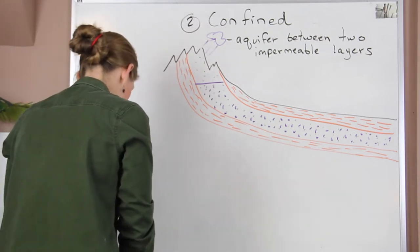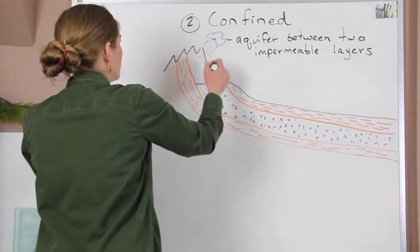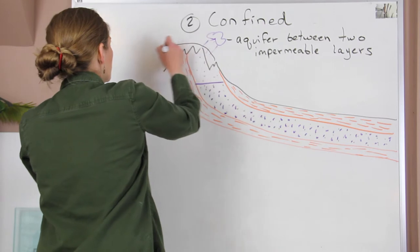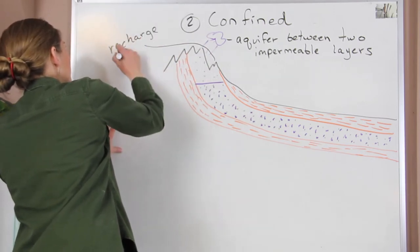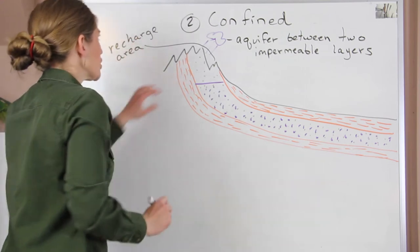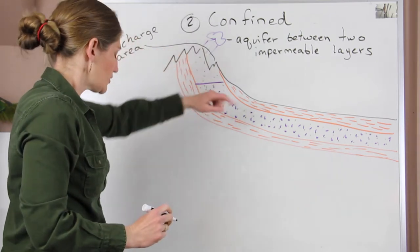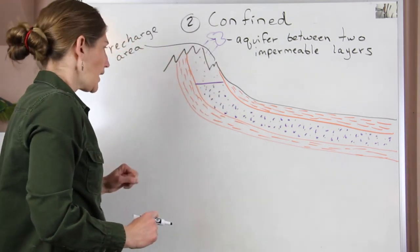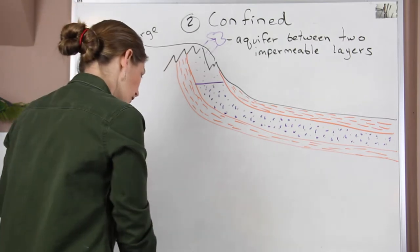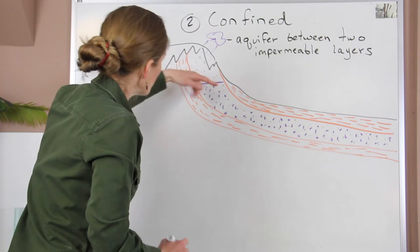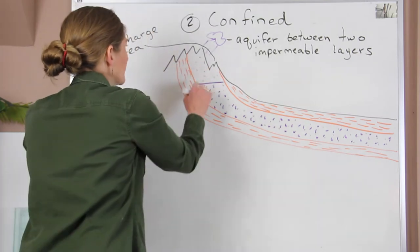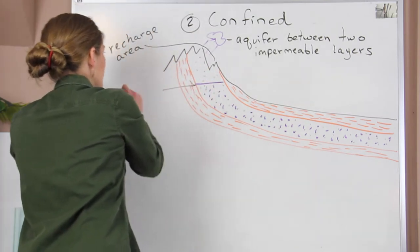And so all of the pore spaces down below here are filled. Now, some interesting things: this area where the water can get in is called our recharge zone. So we have the recharge area where water can get in to the aquifer, and this time the water is going to be flowing down. So we have a lot of water that's over here. This line again is our water table.